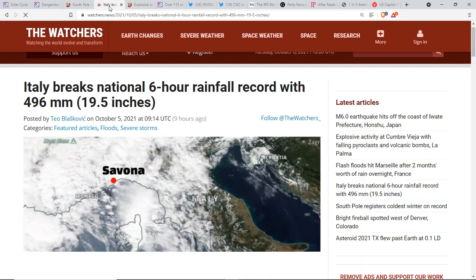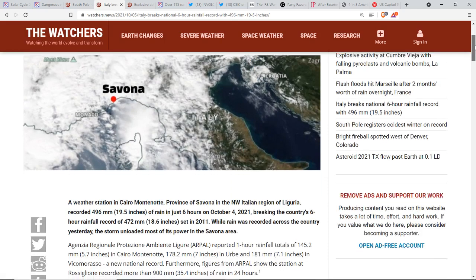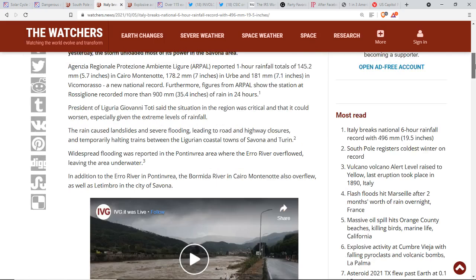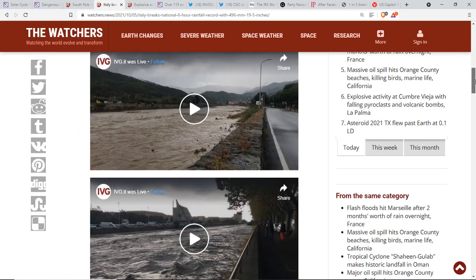Italy breaks national six-hour rainfall record, 19.5 inches. In six hours? 19.5 inches. And it's not a tropical rainforest. That's pretty wild. You know, the flooding that we have seen.